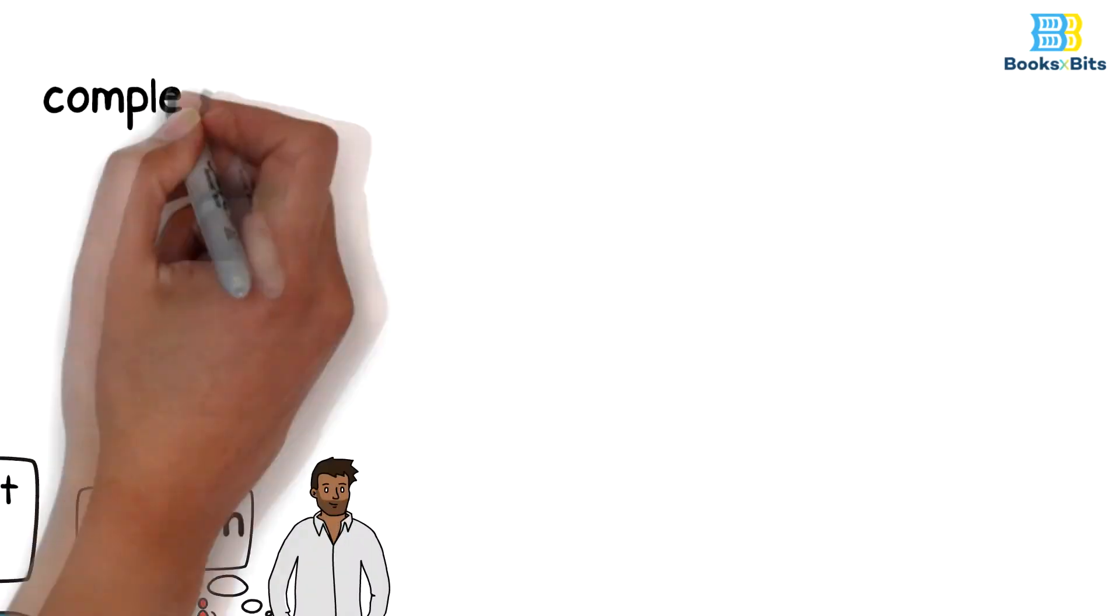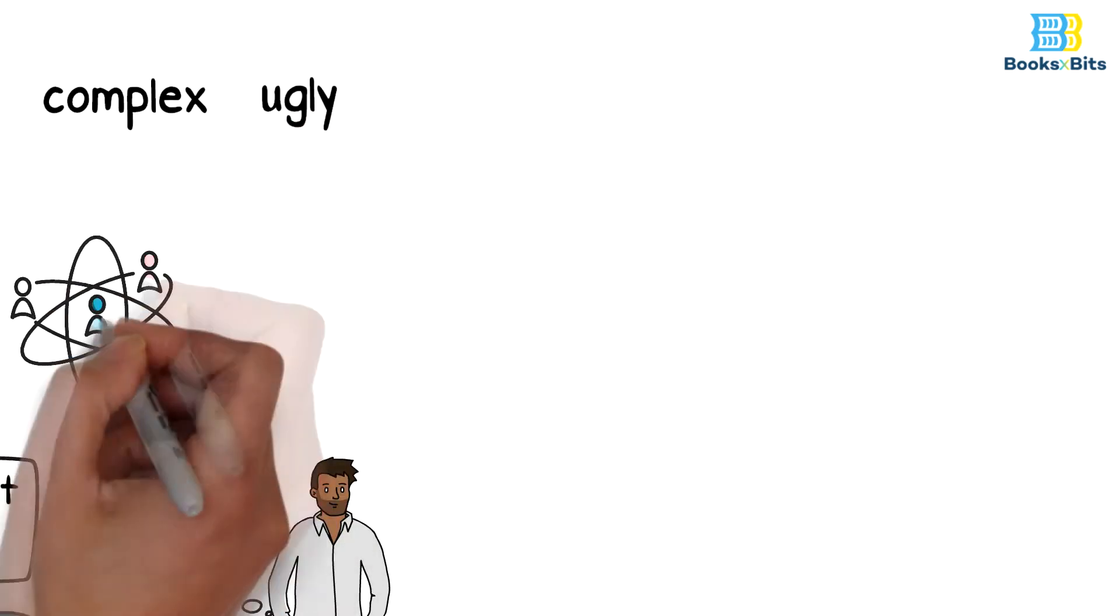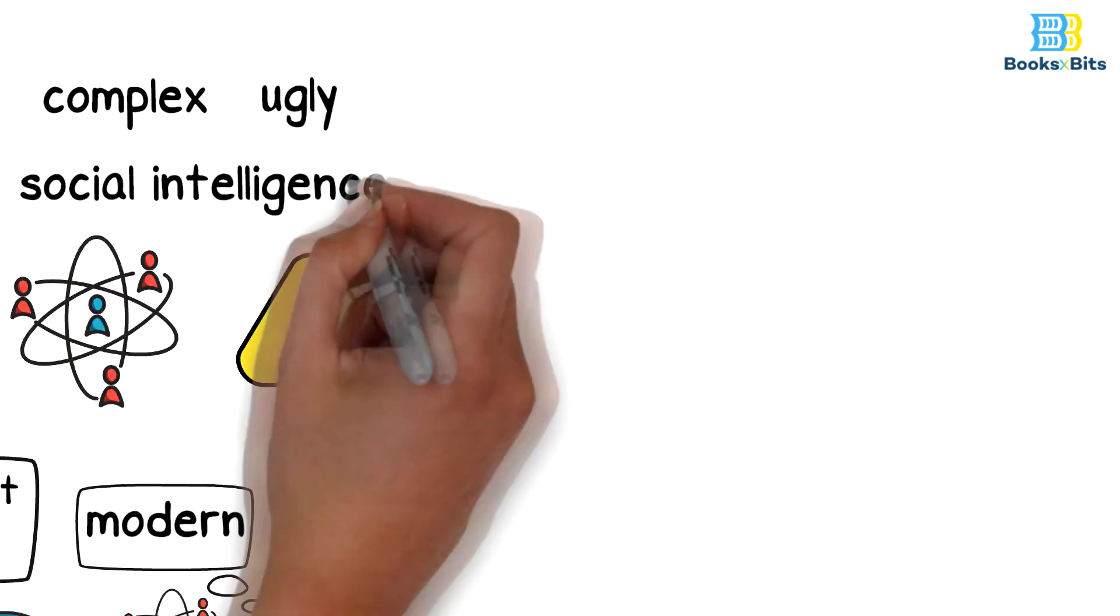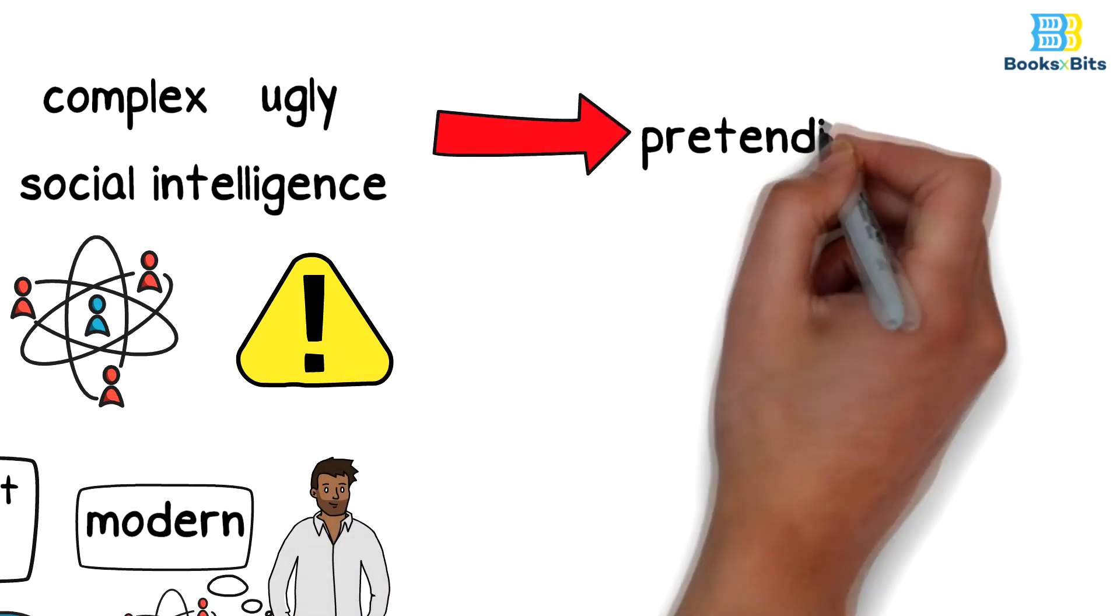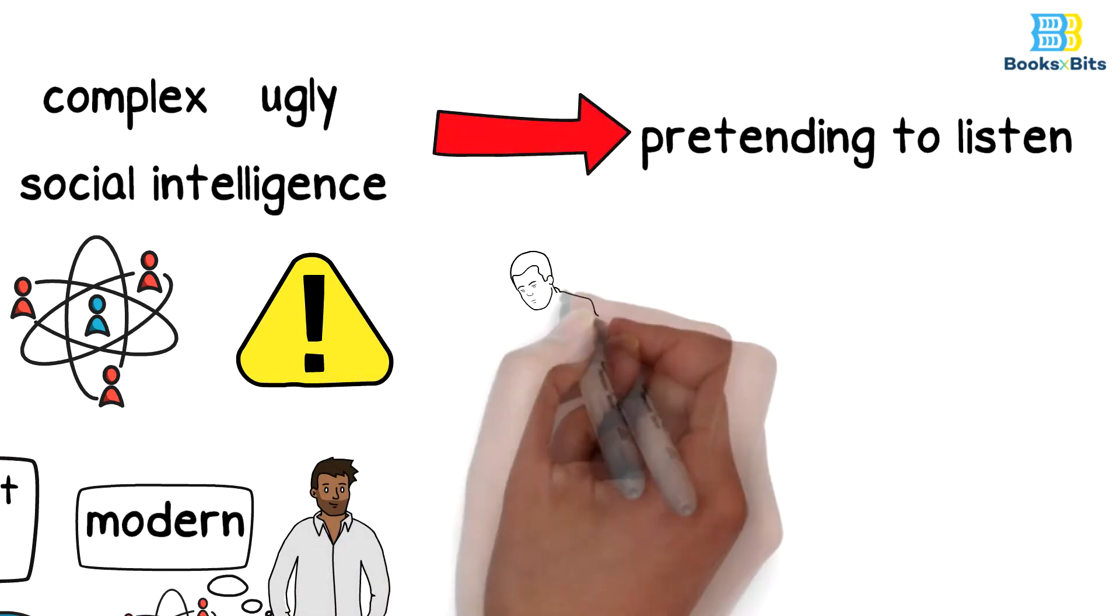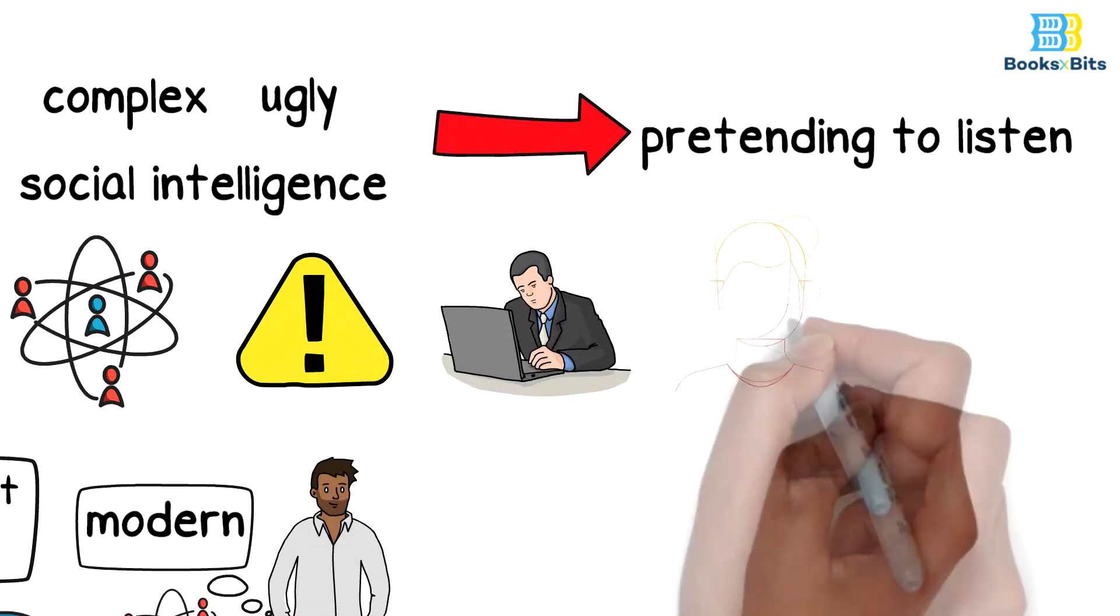Among the complex and ugly things in communication that harm your social intelligence and underestimate yourself is pretending to listen while doing other things at the same time, or chewing gum, or eating.